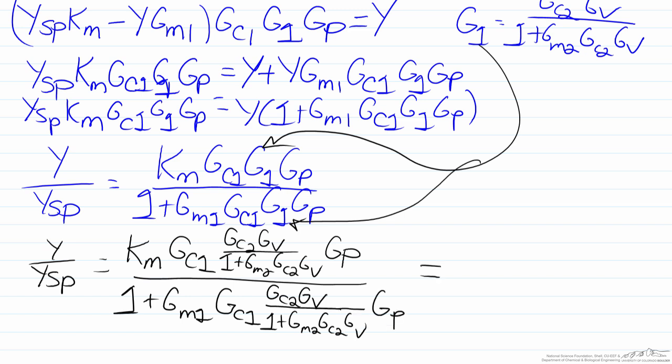For our denominator we will find the least common denominator which is the denominator of G1 and we will clean up the numerator and denominator a bit to end up with Km Gc1 Gc2 Gv Gp divided by 1 plus Gm2 Gc2 Gv.